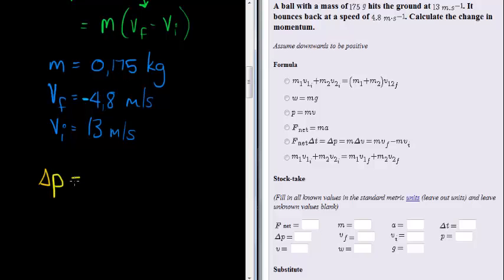So change in momentum is equal to mass of 0.175 times, now the change in velocity is negative 4.8 minus 13.